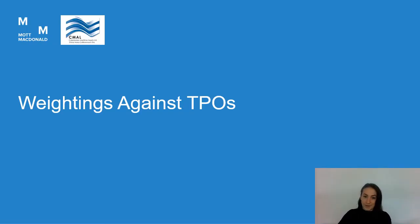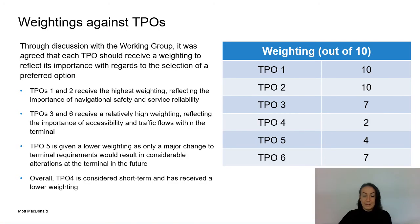The final section within this presentation considers the weightings which the project team have applied to the TPOs. By applying a weighting to each TPO, the project team have ensured that the importance of each TPO is reflected in the outcomes of the appraisal. TPOs 1 and 2 receive the highest weightings, reflecting the importance of navigational safety and service reliability. TPOs 3 and 6 receive a relatively high weighting, reflecting the importance of improving accessibility and traffic flows within the terminal.